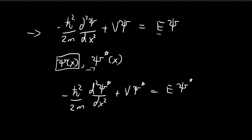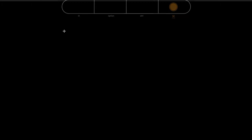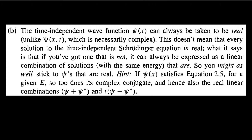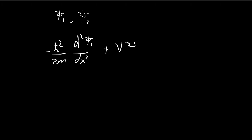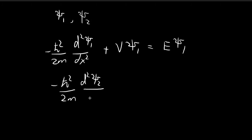The other thing we need to show in order to arrive at our conclusion is: suppose we have solutions ξ₁ and ξ₂ to the time-independent Schrödinger equation — both satisfy the equation, giving E times ξ₁ and E times ξ₂ respectively. So substituting either into the time-independent Schrödinger equation gives the corresponding energy eigenvalue times that function.